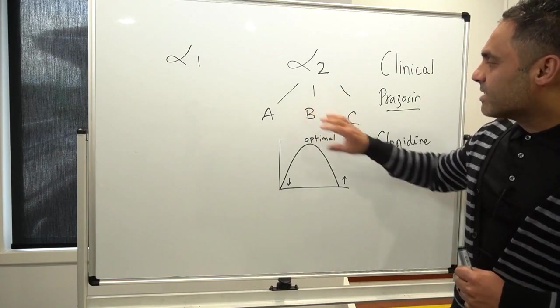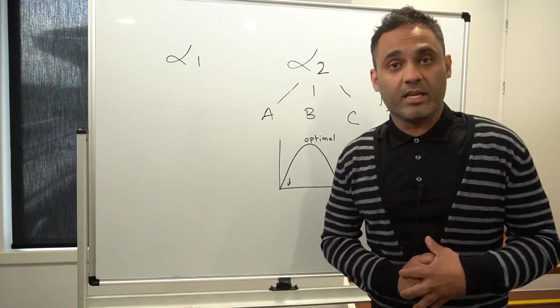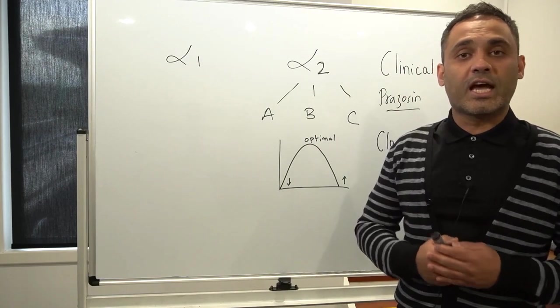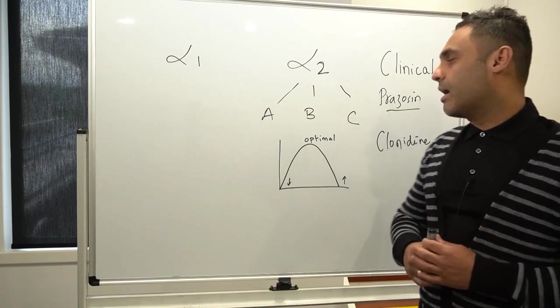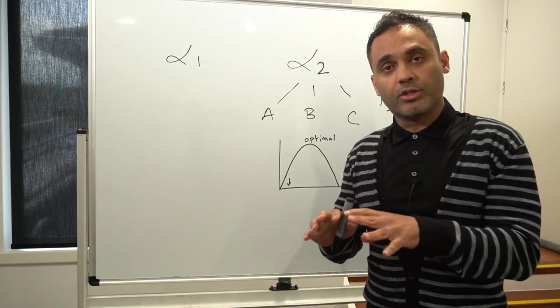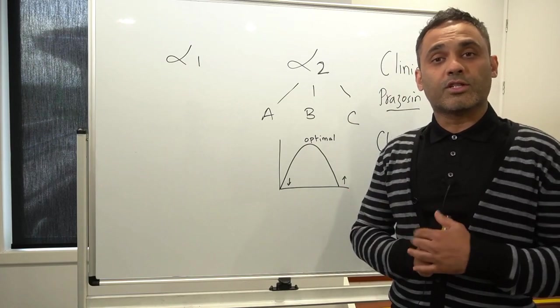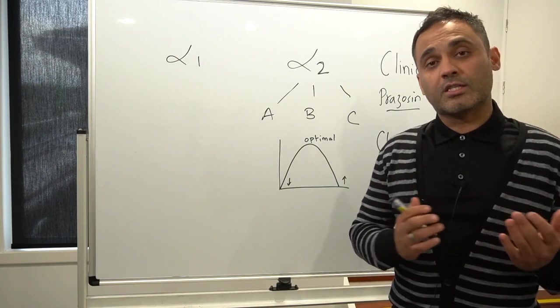It acts as an alpha-2 agonist also at these B and C receptors and here it gives some additional effects such as sedation, hypnosis, and when it acts on the dorsal horn neurons it has analgesic properties by reducing the levels of substance P. So clonidine as I mentioned can be quite a versatile agent.